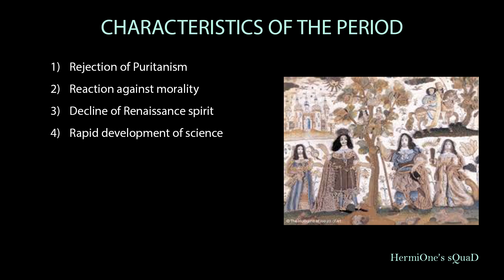This objectivity, rationality and intellectual quality also enlivened the literature of this period. In 1662, the Royal Society was founded for the improving of natural knowledge and to promote scientific research. Sir Isaac Newton was a member of it. This Royal Society revolutionized scientific method and the dispersal of knowledge. Hence, the establishment of the Royal Society was a landmark in the history of England.